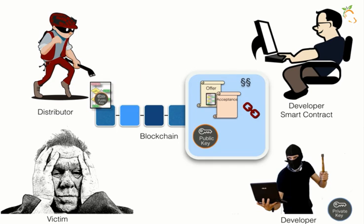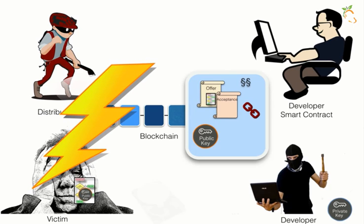Now everything is ready for the ransomware attack, but the distributor still needs to pass through the victim's security systems. Therefore, the distributor either uses phishing mails, zero-day exploits, or other means to install the ransomware software on the victim's computer, where it will encrypt files on the victim's system.